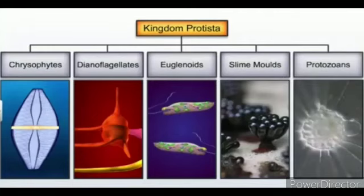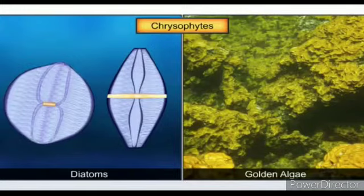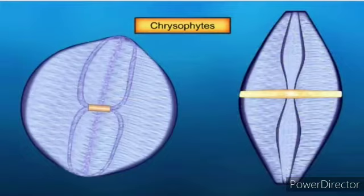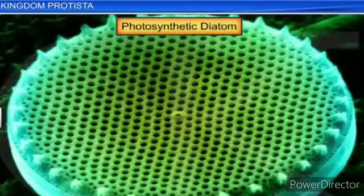Now we will discuss each class. Chrysophytes — the first group — include diatoms, golden algae, and desmids. They are found in fresh water and marine environments. These are microscopic; we cannot see them with the naked eye. They float freely in water currents. Most of them are photosynthetic, meaning they prepare their own food.